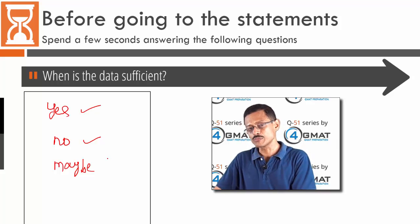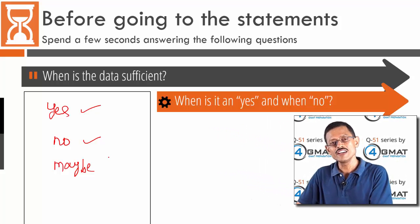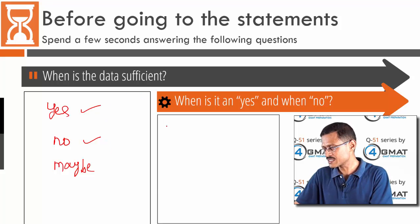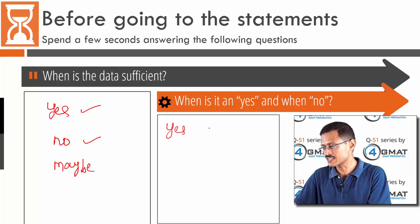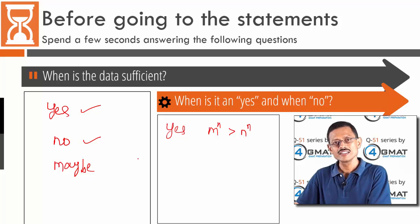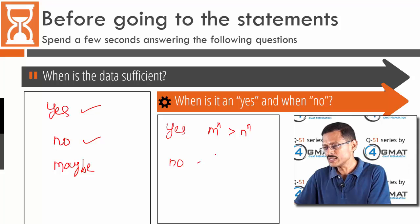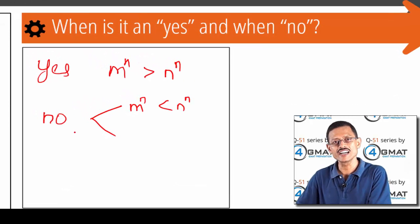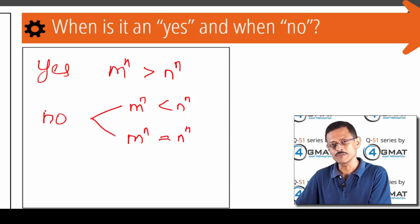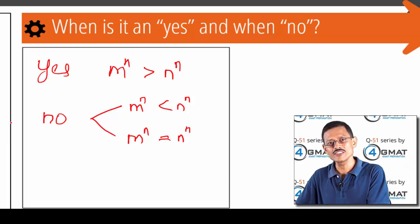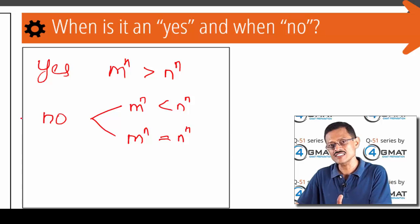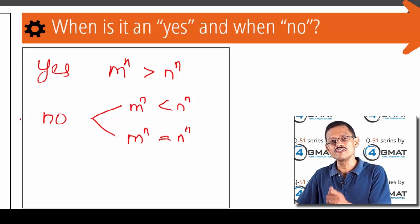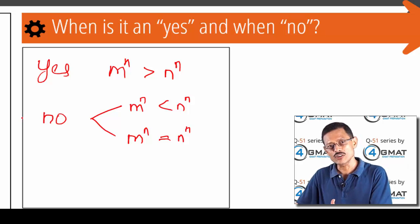The second question to answer before jumping to the statements: when is the answer yes, and when is it no? Yes is reasonably obvious — m power n is greater than n power n. But watch out: there are two instances where we answer no. First, m power n is less than n power n. Second — and this is important — when m power n equals n power n, because the question asks if it is greater, not greater than or equal. Write these conditions on your scratch paper to save trouble when evaluating the statements.